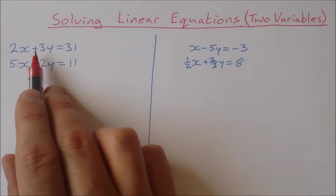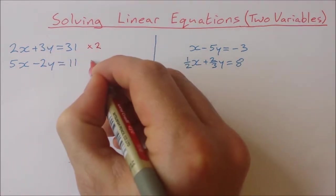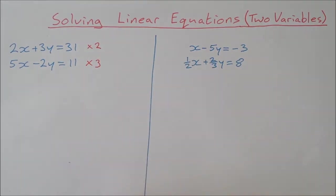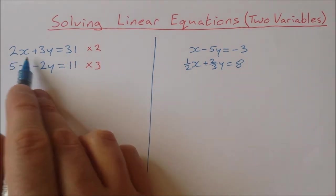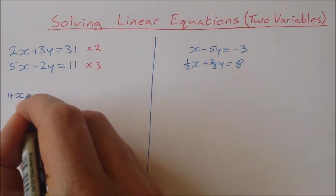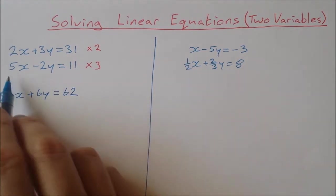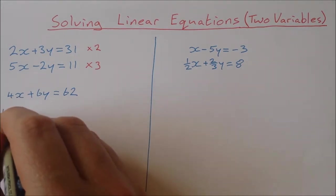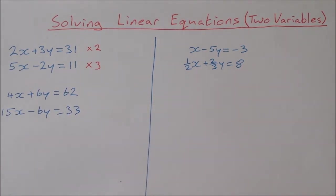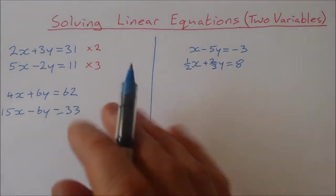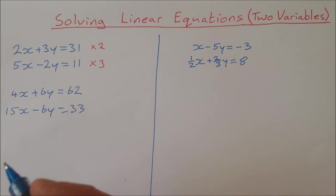I'm going to choose the y's because they're already plus and minus. I'll multiply the top equation by two and the bottom equation by three. Multiplying everything by two I get 4x plus 6y equals 62, and multiplying everything by three I get 15x minus 6y equals 33. Now I have opposite coefficients: plus 6y and minus 6y.